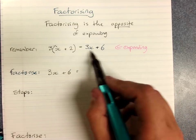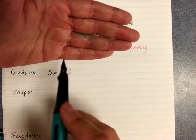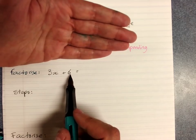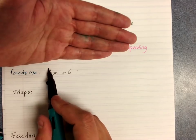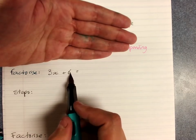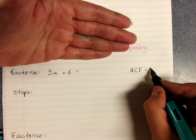When we're asked to factorize, we won't see the expanded version, we'll just see this, and we're looking for the highest number and any letters that goes into both or all of the terms. 3 goes into 3, 3 goes into 6, so we've got this highest common factor of 3.